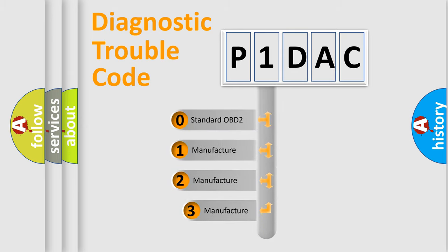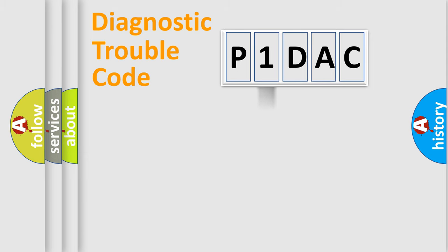If the second character is expressed as zero, it is a standardized error. In the case of numbers 1, 2, 3, it is a more precise expression of the car-specific error.